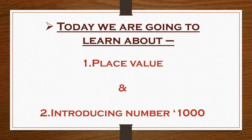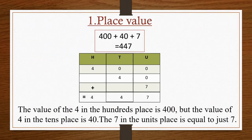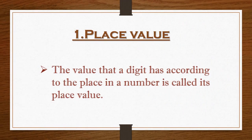So students, today we are going to learn about two subtopics from number work. These are the last parts of number work: the first one is place value, and the second one is introducing the number 1000. The value of 4 in the hundreds place is 400, but the value of 4 in the tens place is 40, and the 7 in the units place is equal to just 7. The value that a digit has according to the place in a number is called its place value.